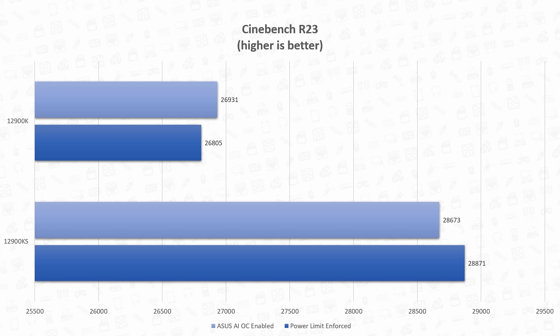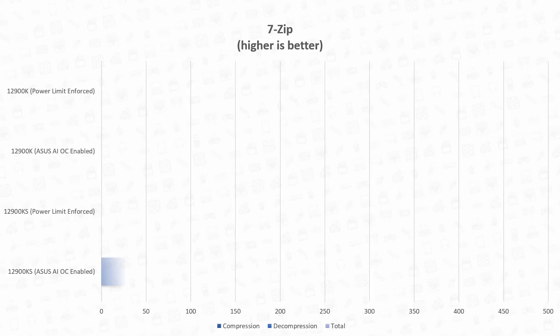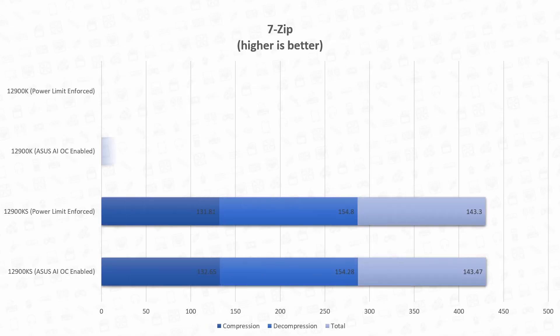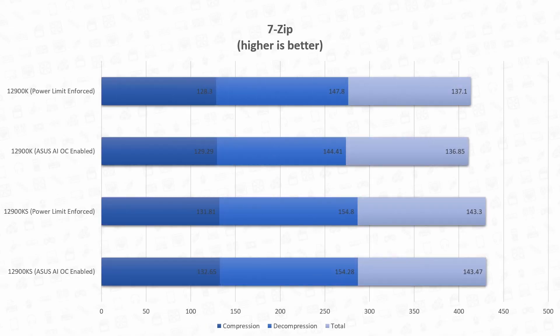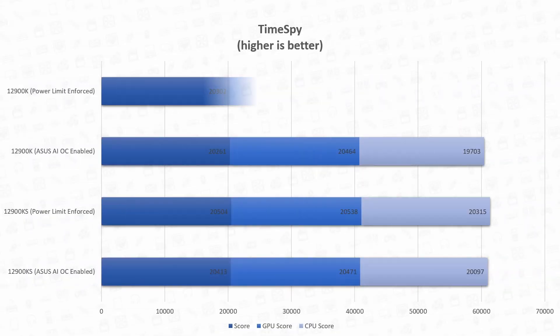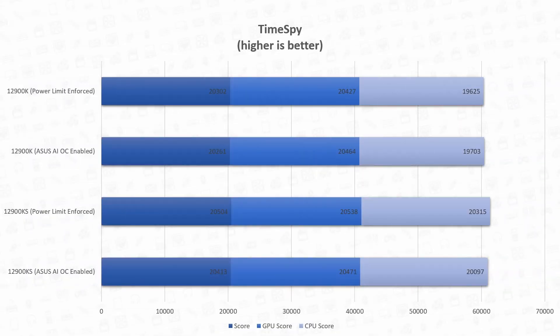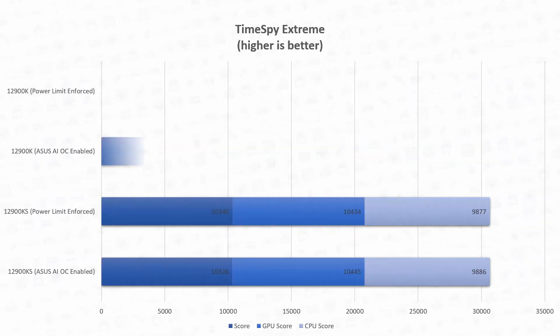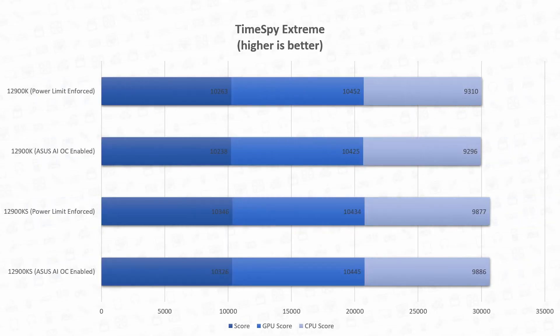Overall, there's a small increase in performance with both benchmarks. The same can be said with our 7-Zip benchmark, with a 4.5% increase with power limit enforced and almost a 5% increase with ASUS AI Overclock enabled. Wrapping up with Time Spy and Time Spy Extreme, we can see a performance increase of between 2–6%.